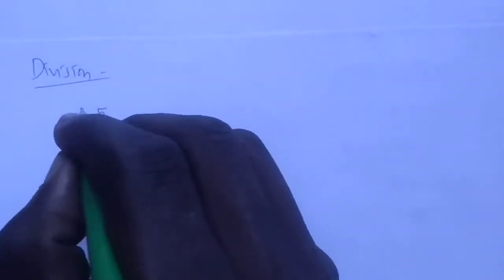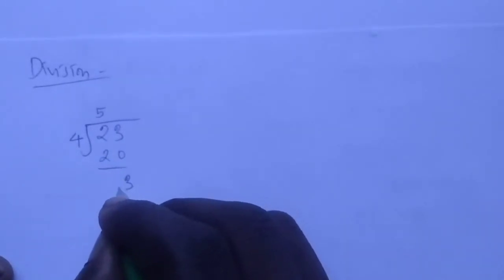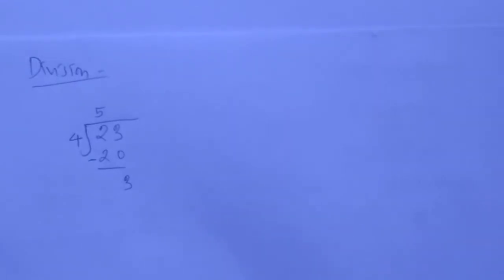For example, when you have 23 divided by 4, you get 5 here. 5 here gives us 20. Then you get 3. When you minus, you get 3 as the remainder.